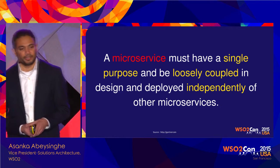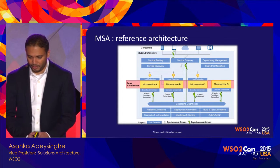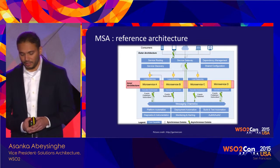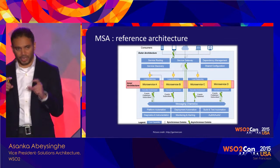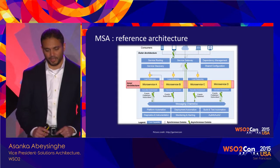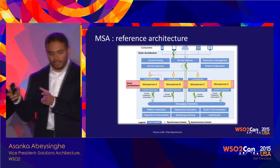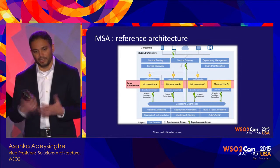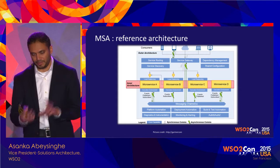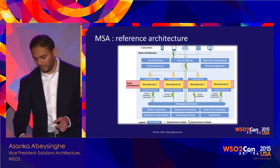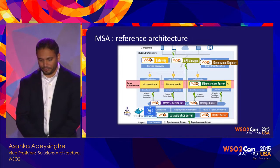Most of this we tried to do before but it didn't work because of tooling and infrastructure limitations. Today we can do it easily using Docker and Kubernetes. A key insight from a Gartner reference architecture is that architects often focus only on the inner architecture — how to write microservices and provide a runtime — but there's also an outer architecture that enables microservices capabilities, including service routing, a service gateway, and proper message channels.